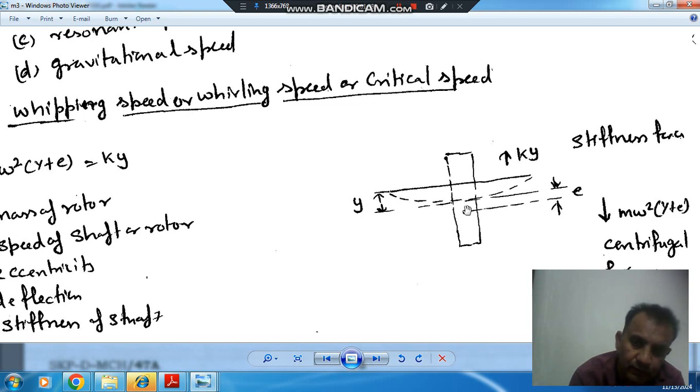So initially the centrifugal force will be M omega square E. So it will tend to deflect the shaft. So finally the shaft is deflected by some amount Y. Then the radius of rotation of the rotor mass is Y plus E. Then the centrifugal force is M omega square times Y plus E. And the resisting force is kY.